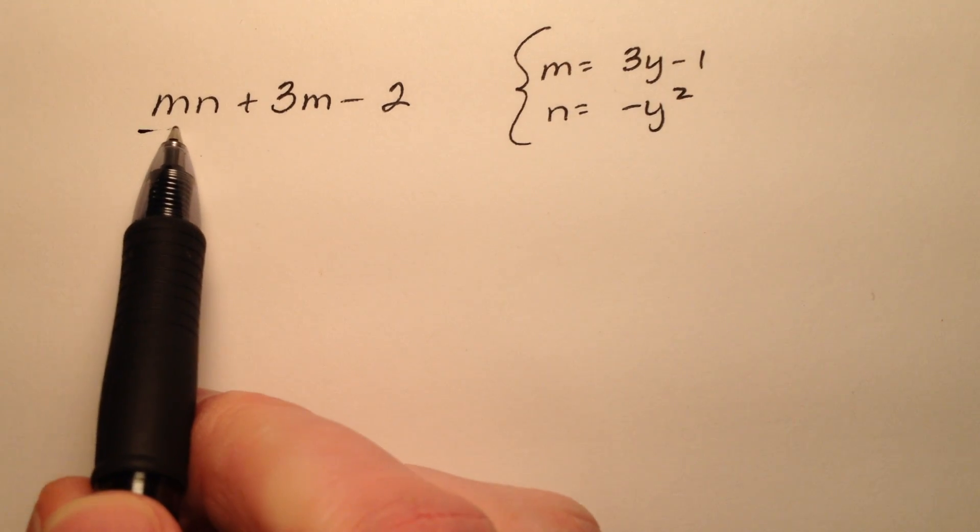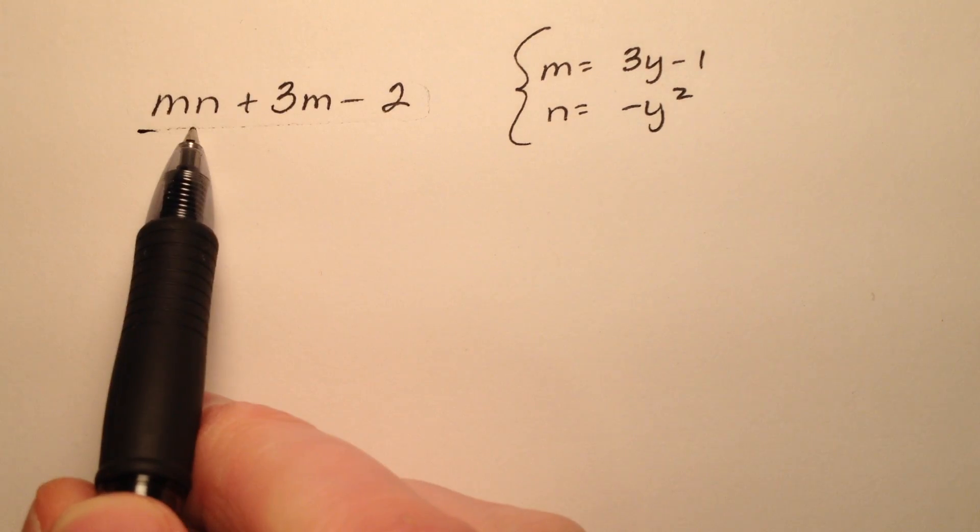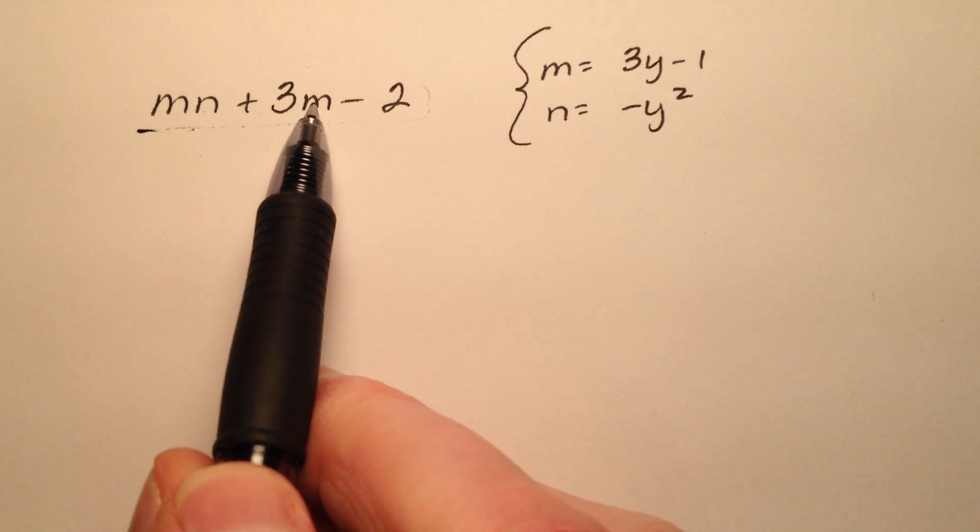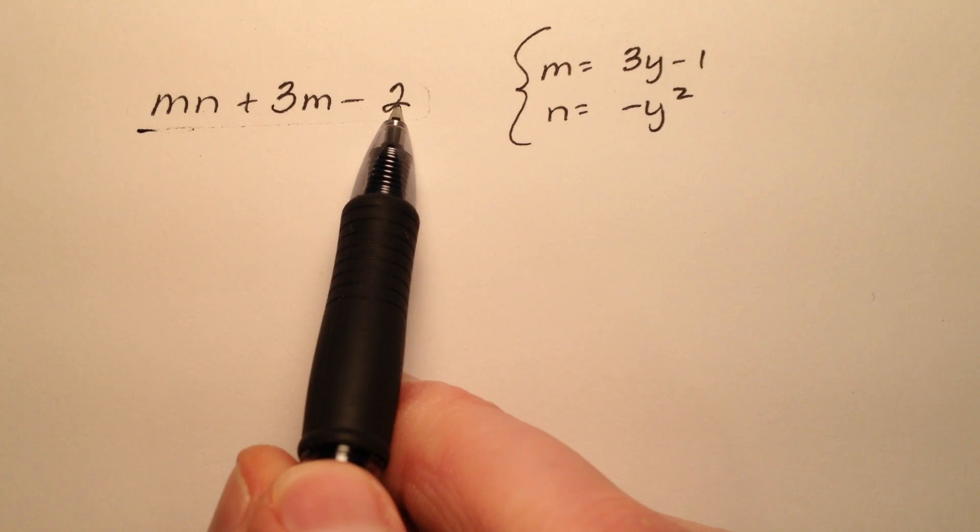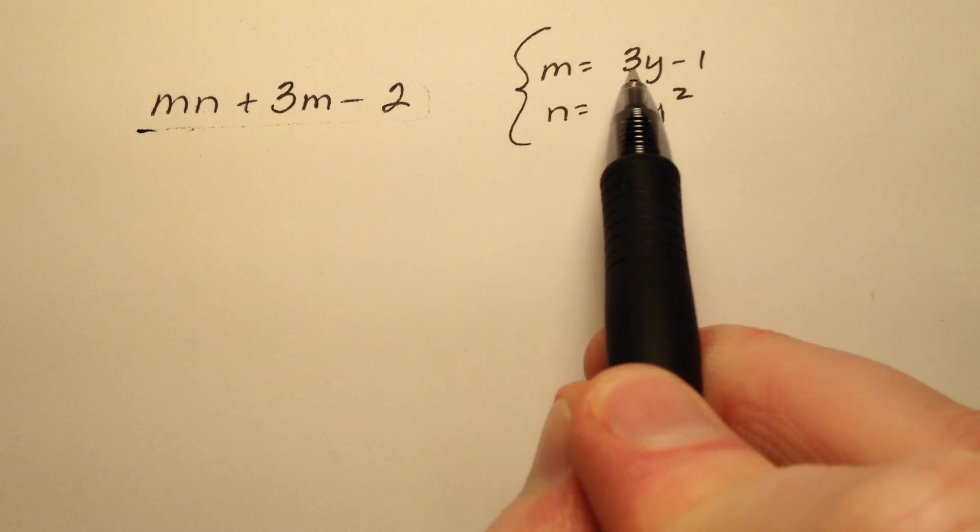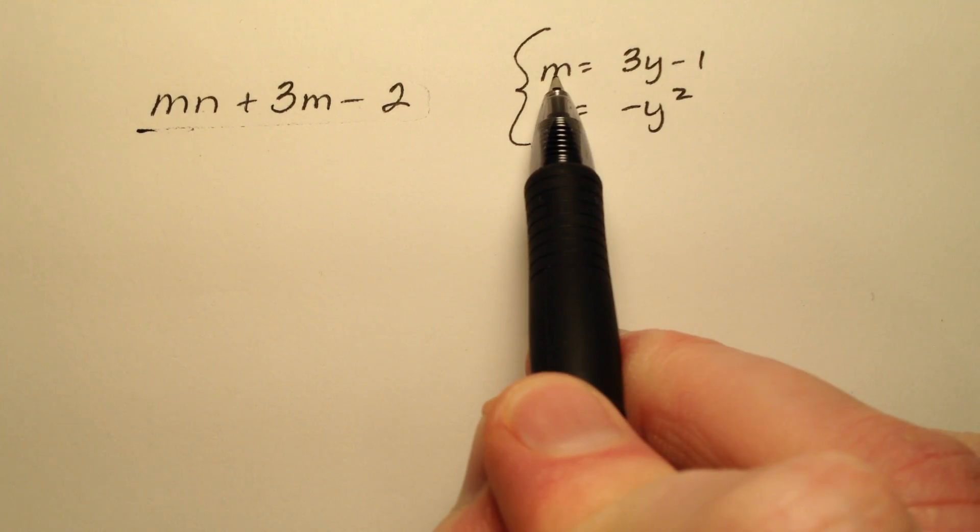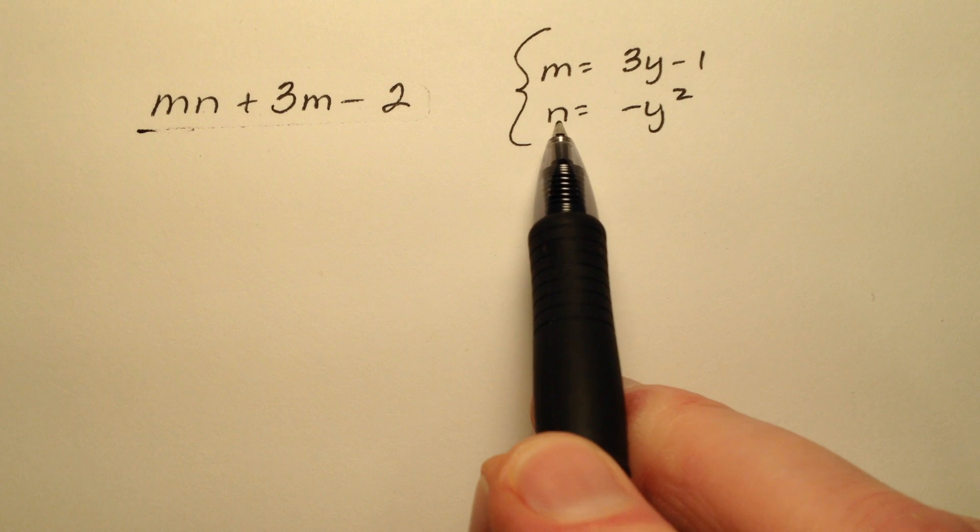In this example, we're going to evaluate this algebraic expression, mn plus 3m minus 2, and we're going to do so using values 3y minus 1 for m and negative y squared for n.